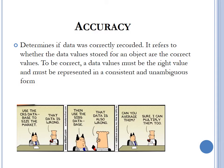Accuracy determines if data was correctly recorded. It refers to whether the data values stored for an object are the correct values. An example of accuracy: if the price of an item is $1,000 but on the system it is reflected as $900, then we would say that data is inaccurate. Accuracy means that whatever is reflected on a system must be representative of reality.